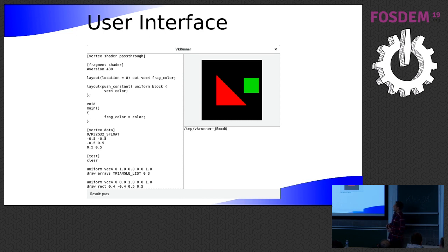So on a branch, there's a user interface. I'm not sure whether it's particularly useful, but mostly just for fun. You can, so it's just using GTK, you can write the test script in the editor on the left and in the background it continuously runs the test and tells you whether it failed or not and shows you the image as a result.